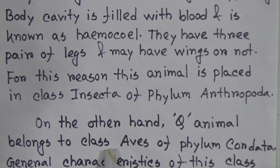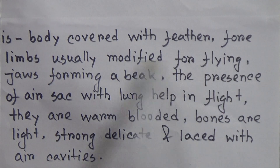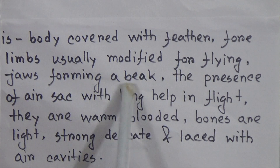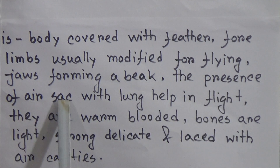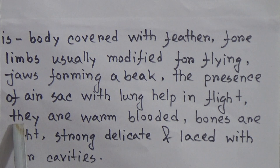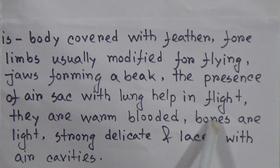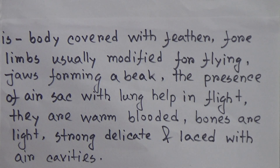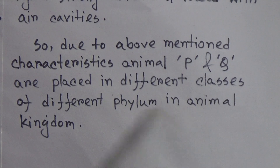On the other hand, Q animal belongs to Class Aves of Phylum Chordata. General characteristics of this class are: body is covered with feathers; four limbs usually modified for flying; jaws forming a beak; presence of air sacs with lungs helping in flight; they are warm-blooded; bones are light, strong, delicate and laced with air cavities. Due to these differing characteristics, animals P and Q are placed in different classes of different phyla in the animal kingdom.